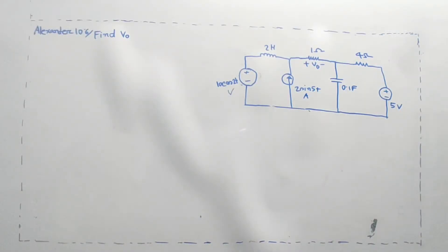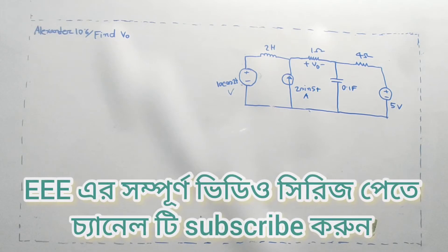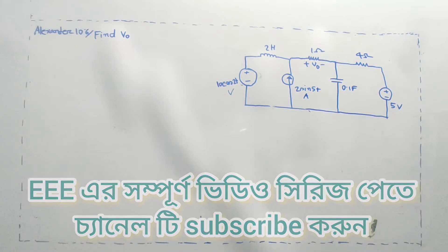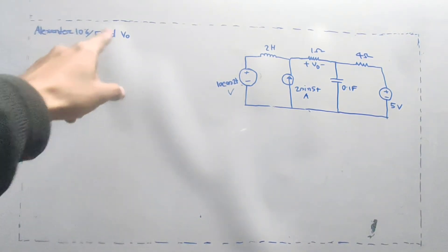Hello, I am going to solve the problem in this video. I am going to try to get a very good idea of this circuit. In Alexander problem 10.6, find V0.